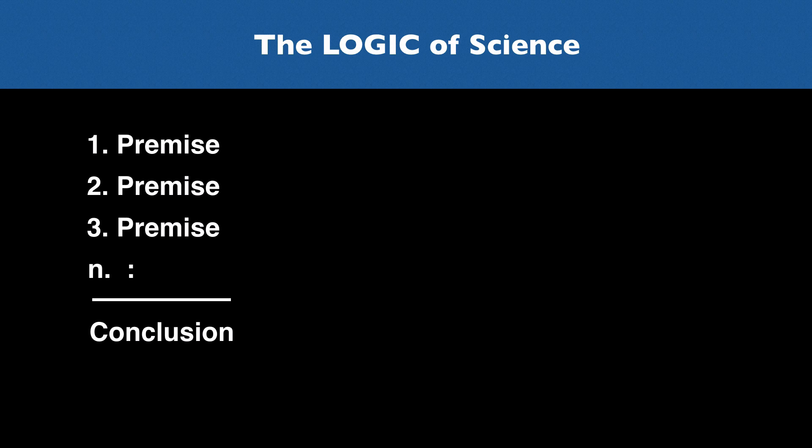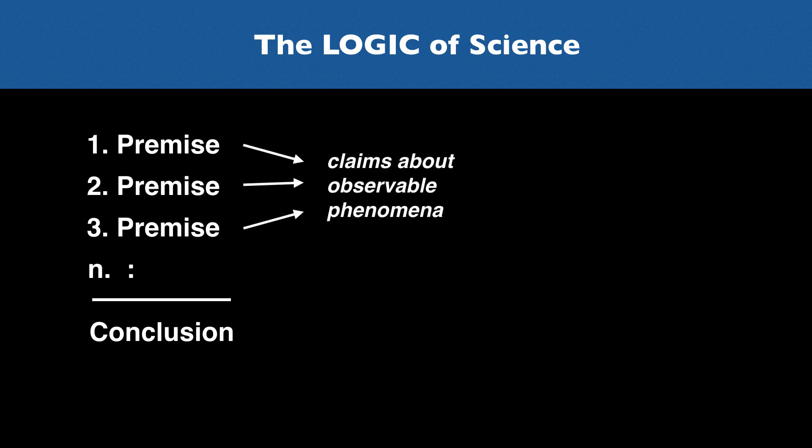And that question gets translated into: what are the criteria for a good argument where the conclusion is a scientific knowledge claim? These arguments are going to have some common features. The premises, for instance, will normally make claims about observable phenomena — what we can perceive or measure. They won't all be premises like this, but some of them will be.